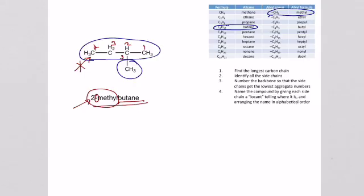It gets tedious to write out all the carbons and hydrogens, so we'll omit them and just show the bonds — a line or stick structure. Here carbon one, two, three, four, with the methyl group on carbon two. These are two representations of the same compound, and we'll use the stick form more as we move along.